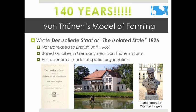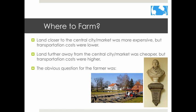In his book, Von Thünen explained the first economic model of spatial organization, based on cities in Germany near his farm. It was the beginning of all location geography and inspired many other models to come. The model is based on deciding where to grow a crop and what type of crop should be grown.